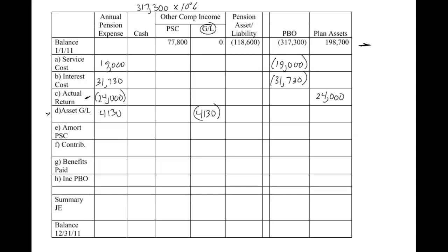One key thing to remember is if you look at video five, we said we're actually showing the expected return. So if you net these two together, you get 19,870 — and if you look back, that was the expected return. So another way: if you can't remember whether the gain or loss is a credit or debit, come here and these two numbers have to net out to the expected return. So if I put 4,130 in as a credit, my net of those would be 28,000, which obviously does not equal the expected return. There are two different ways to remember the signs on the worksheet.